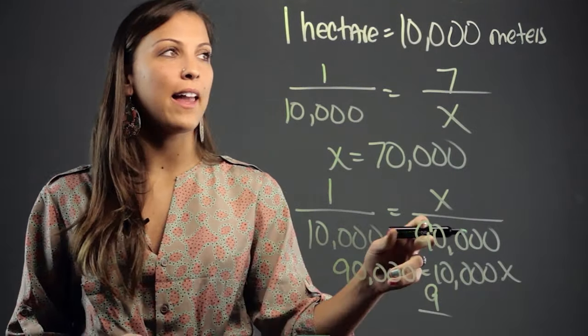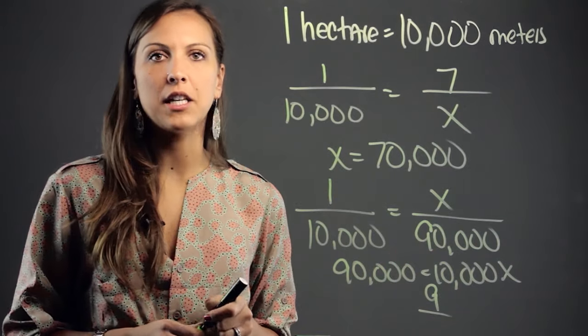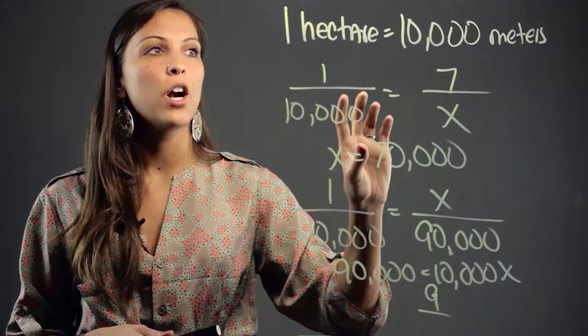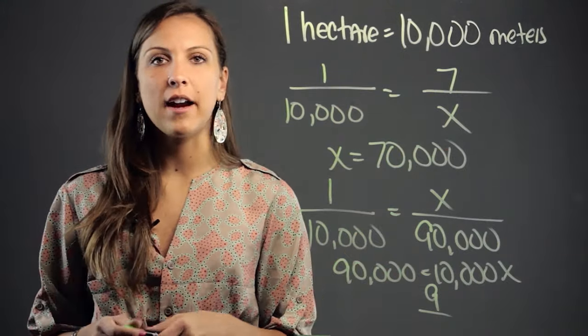So we find out that 90,000 meters are equivalent to 9 hectares. Once you have the conversion ratio, you can use it to convert from hectares to meters and backwards from meters to hectares.